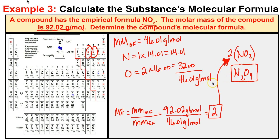Hopefully that makes sense and now you know how to calculate the molecular formulas of different compounds — whether the empirical formula is given or not. If it's not given, the problem is more lengthy, but you should know how to do that now. If you like what you see, click the subscribe button in the bottom right corner, and feel free to leave any comments or questions below. I really hope you found this helpful.